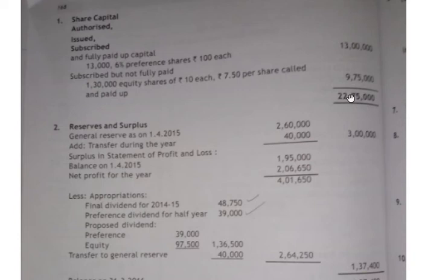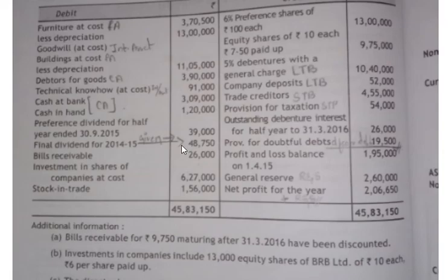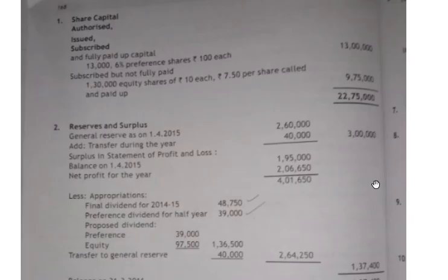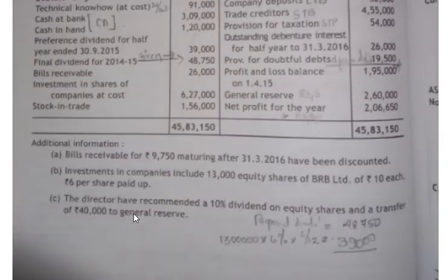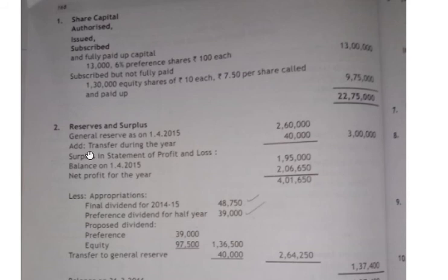Total share capital comes up to twenty-two lakh seventy-five thousand. Moving on to the next working note — reserves and surplus. We always start with general reserve as on 1st April 2015, which is the beginning of the year. From the credit side in the question, general reserve is two lakh sixty thousand. Looking at the additional information, rupees forty thousand has been transferred to general reserve, so we add that transfer during the year — forty thousand — giving an outer column amount of three lakhs.